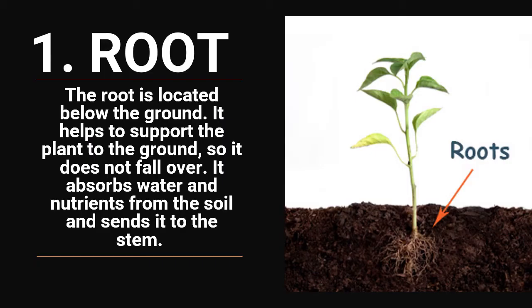First comes the root. The root is located below the ground. It helps to support the plant to the ground so it does not fall over. It absorbs water and nutrients from the soil and sends it to the stem.